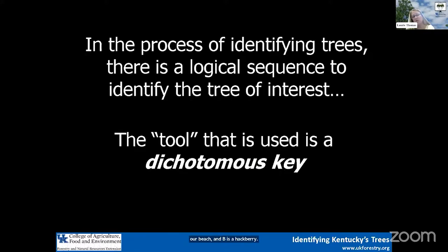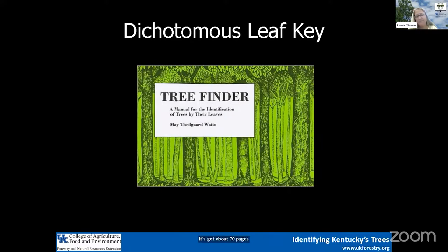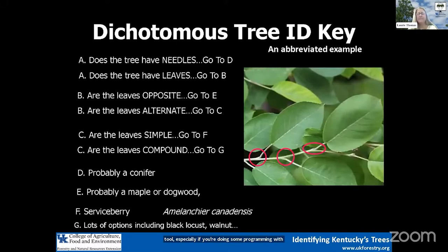The process of identifying trees involves a logical sequence using a tool called a dichotomous key. You've probably used one before — they can be used for all kinds of organisms. This is a great dichotomous leaf key called the Tree Finder. It's about $5 off Amazon, pocket-sized, with about 70 pages. It has many of our trees found east of the Mississippi. That's the tool we'll work through now.